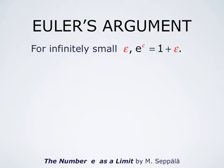From that definition, it follows that for infinitely small numbers epsilon, e to the epsilon is 1 plus epsilon. That is, when epsilon is very close to 0, e to the epsilon can be computed by simply computing 1 plus epsilon — that is, the tangent line to the graph of e to the x approximates the graph very well when we are close to 0. The quantity epsilon has been printed in red because epsilon here is not really a number; it is an infinitely small quantity. This is the argument that Euler used.